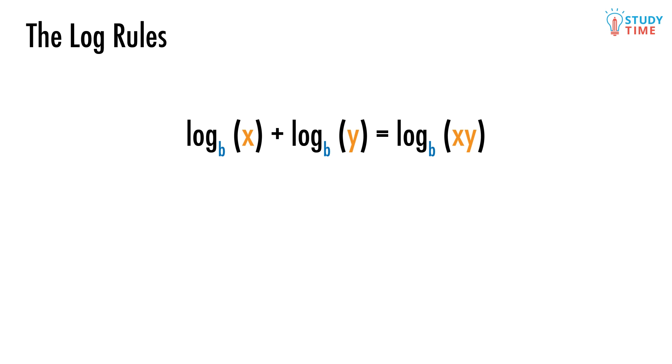Log base b of x plus log base b of y equals log base b of x times y. So we've here got two logs with the same base b, but different arguments x and y, and we're trying to add those logs together. The most important thing here is that their bases are the same. Because of this, we simplify them into a single log, where the new argument is the product of the two old arguments.